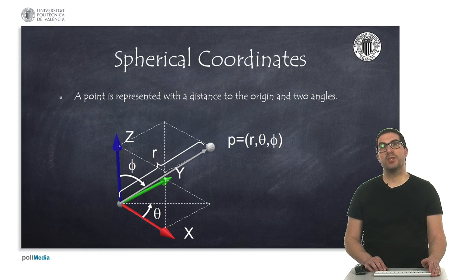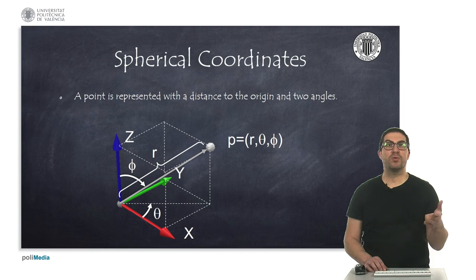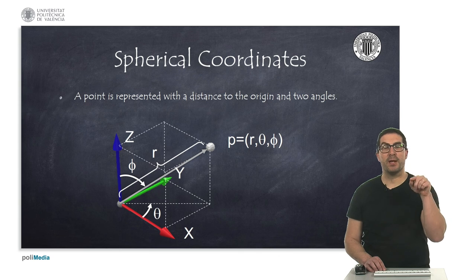This representation is useful for describing 3D rotations, particularly when we use, for instance, orientations in order to point the camera into a point or a direction.